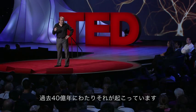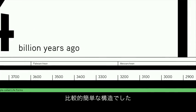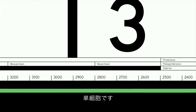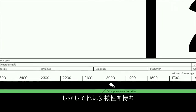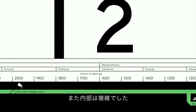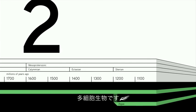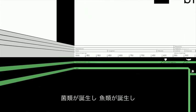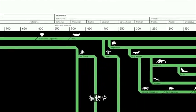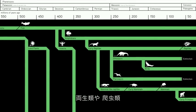We can see this happening over the last four billion years. For most of that time of life on Earth, living organisms have been relatively simple, single cells. But they had great diversity and inside great complexity. Then, from about 600 to 800 million years ago, multi-celled organisms appear. You get fungi, you get fish, you get plants, you get amphibia, you get reptiles, and then, of course, you get the dinosaurs.